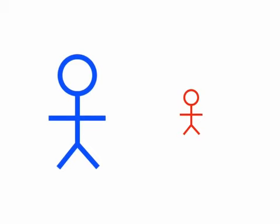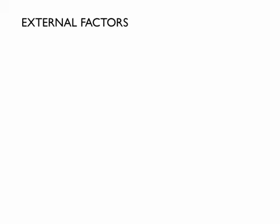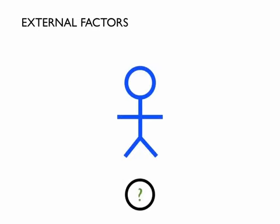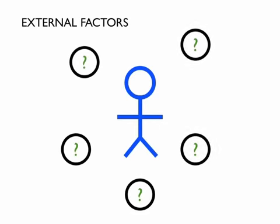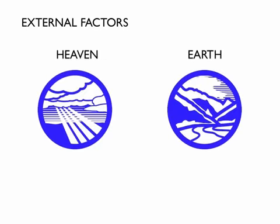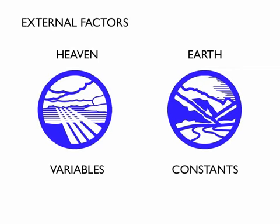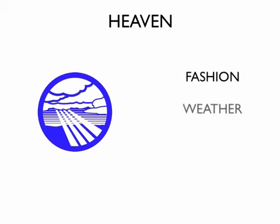Second, external factors: heaven and earth. These two factors are the reason that you must always observe and question the world around you. Think of heaven as the variables — it could be fashion trends, the weather, or the current state of the economy. Whenever things are changing, you must be willing to change with them. Always look for patterns.